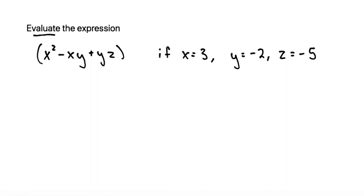If we plug in 3 for x, we get 3 squared minus x times y, so that would be 3 times negative 2, and I'm using parentheses since I have two numbers multiplied by each other. And then plus y times z is negative 2 times negative 5.